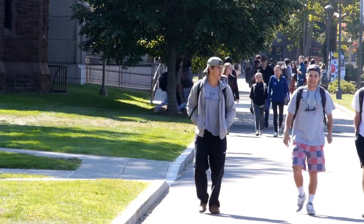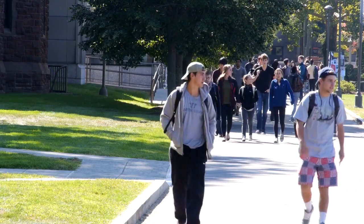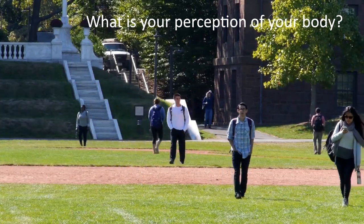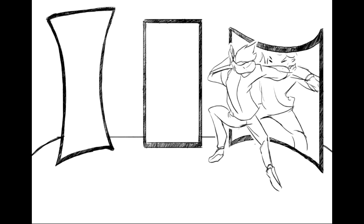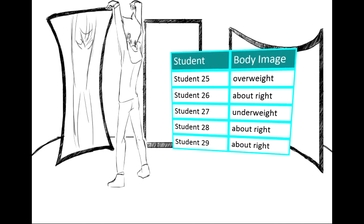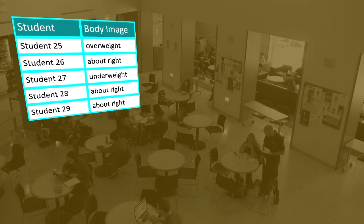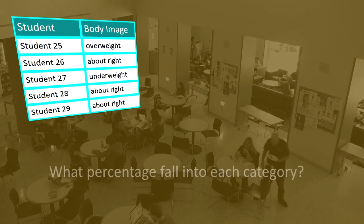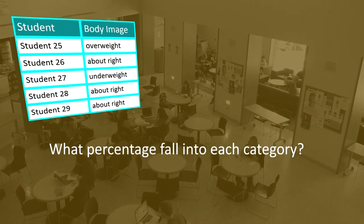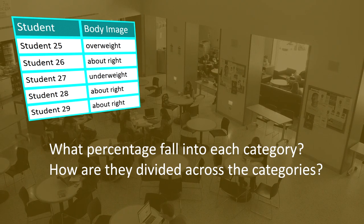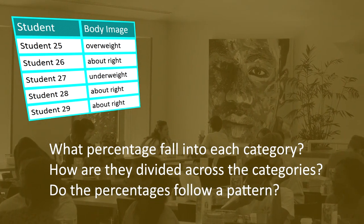Here's an example. A random sample of 1,200 U.S. college students were asked the following questions as part of a larger survey: What's your perception of your own body? Do you feel that you're overweight, about right, or underweight? This table shows part of the data — five of the 1,200 observations. Information that would be interesting to get from this data includes what percentage of the sample students fall into each category, or how are students divided across the three body image categories? Are they equally divided? If not, do the percentages follow some kind of pattern?